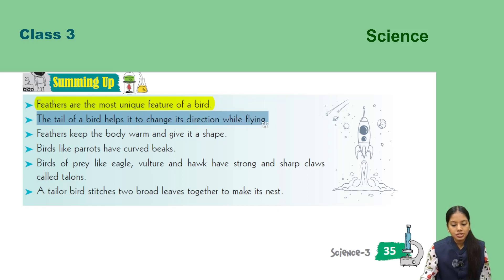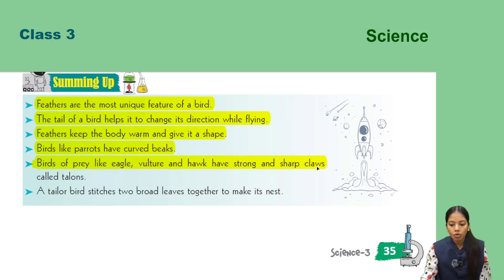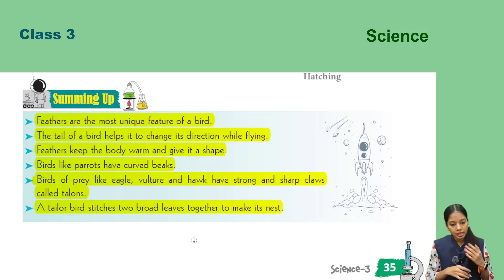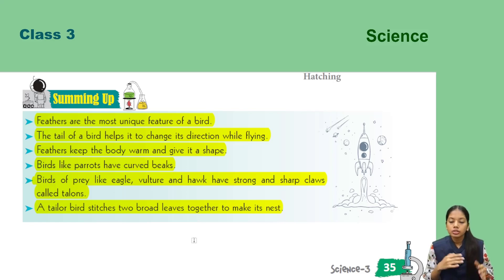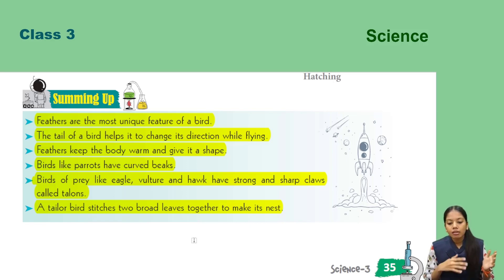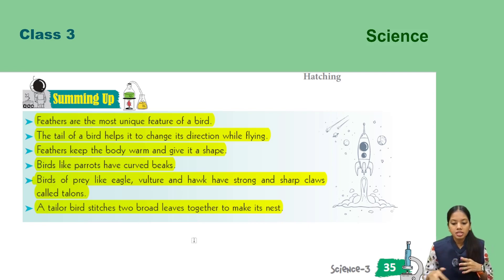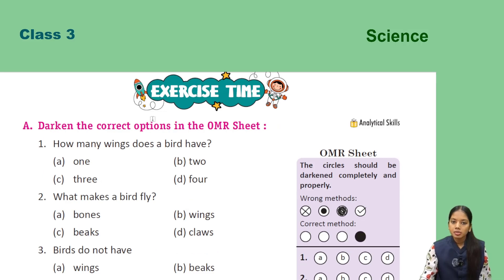Review: feathers are the most unique feature of a bird. The tail of a bird helps it to change its direction while flying. Feathers keep the body warm and give it a shape. Birds like parrots have curved beaks. Birds of prey like eagle, vulture, and hawk have strong and sharp claws called talons. A tailor bird stitches two broad leaves together to make its nest.